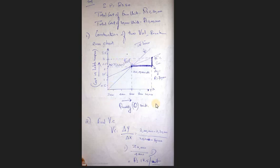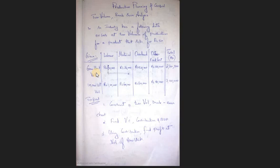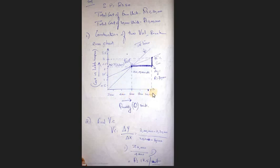Total cost of 6,000 units is Rs. 2,30,000. Total cost of 10,000 units is Rs. 3,00,000. Now, construction of the two-volume break-even chart. Quantity is the independent variable on the x-axis. Cost is the dependent variable on the y-axis. The x-axis goes from 2 to 10 (in thousands): 2, 4, 6, 8, 10.